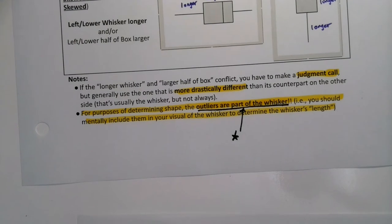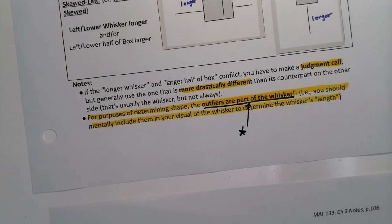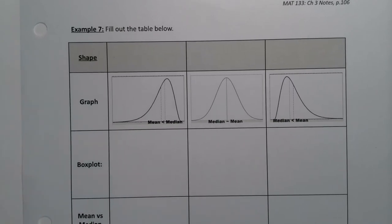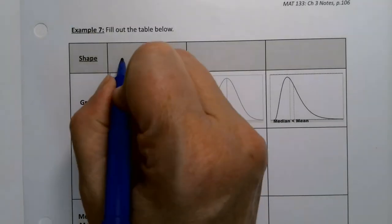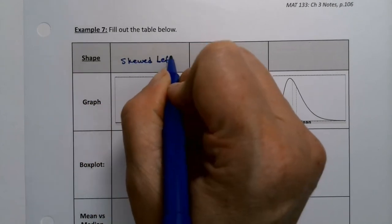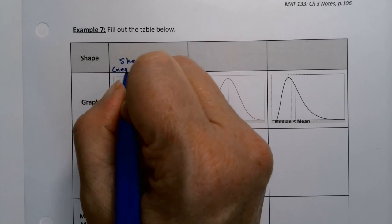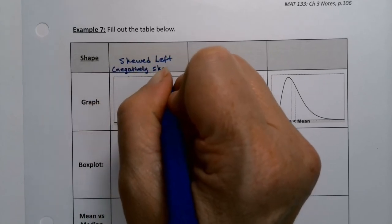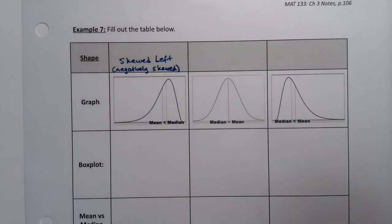Now let's put it all together in a nice little table. So this type is skewed left or negatively skewed. You can say either one. Some books write negatively skewed a lot. Some books say skewed left a lot.